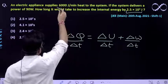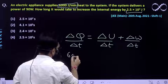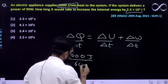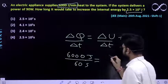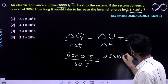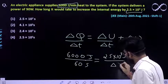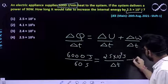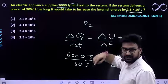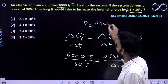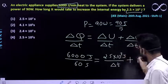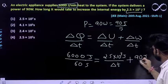Delta Q over delta T, the heat supplied to the system, is 6000 Joules per minute, which is equivalent to 6000 divided by 60 seconds — that is, 100 Joules per second. This must equal delta U over delta T, the change in internal energy, which is 2.5 × 10³ Joules divided by delta T, plus the work done by the system per unit time, which is 90 watts — that is, 90 Joules per second.